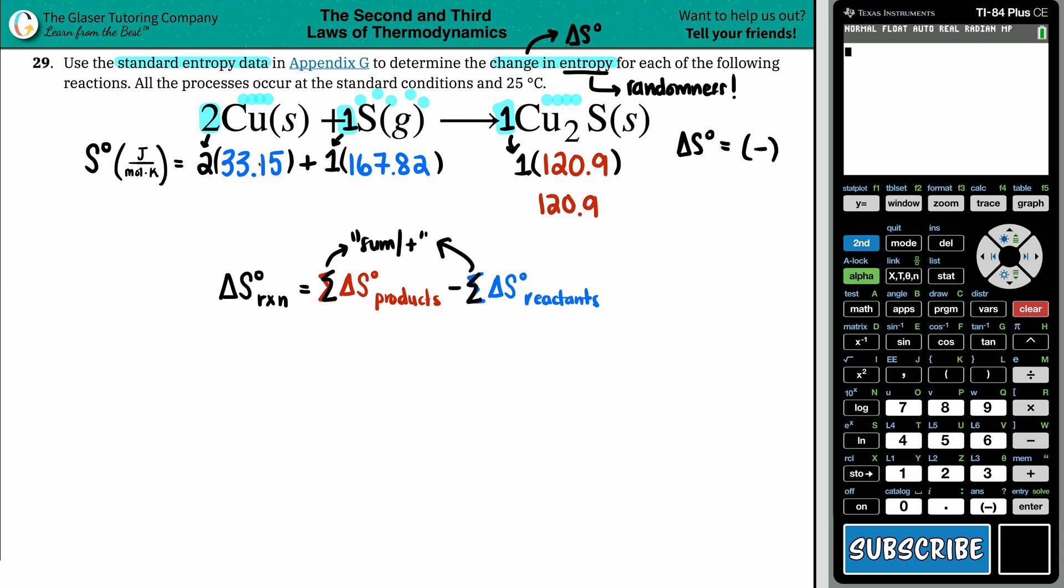But now let's go to calculator just to figure out what this summation is. So what I'm going to do on calculator, I'm going to say 33.15, I'm going to times that by two, and then I'm just going to add it to 167.82. There we go. So I get 234.12.